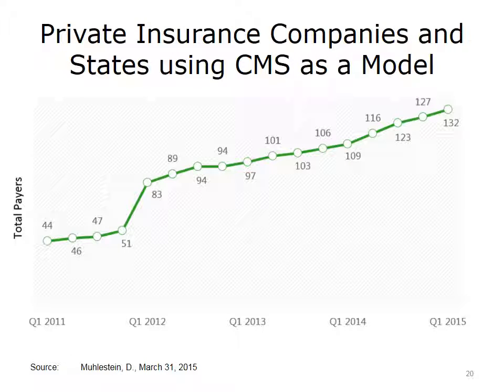In addition to CMS, private insurance companies are also adopting value-based payment because their members want value too. Through January 2015, 132 different payers — including large ones such as UnitedHealthcare and Aetna — have at least some form of value-based payment. States that pay their share of Medicaid are actively changing their payment models from fee-for-service to value-based care. An increasing number of people in the U.S. are being treated by physicians paid based on one form or another of value-based care.